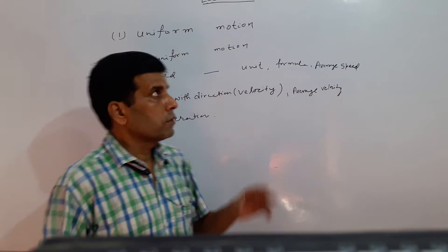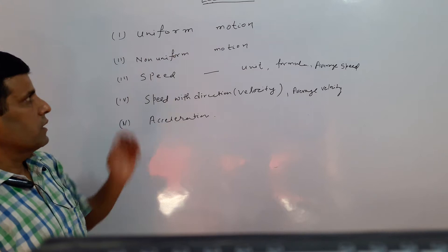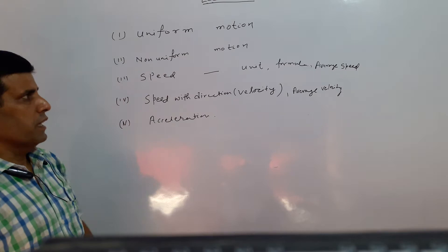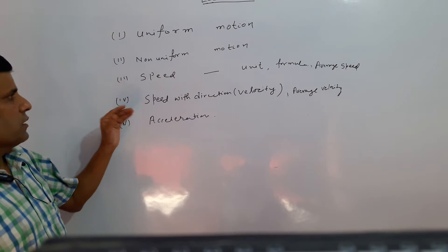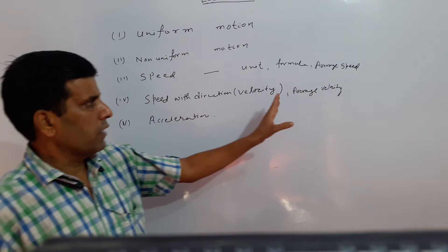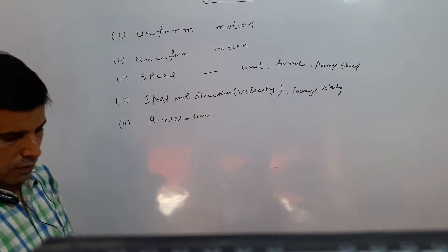Today is your Lecture 2. What is today's discussion? First, what is uniform motion? Second, non-uniform motion. Then we discuss speed — the unit of speed, formula, and average speed. Then we discuss speed with direction, which means velocity, and also average velocity. After that, we discuss acceleration.